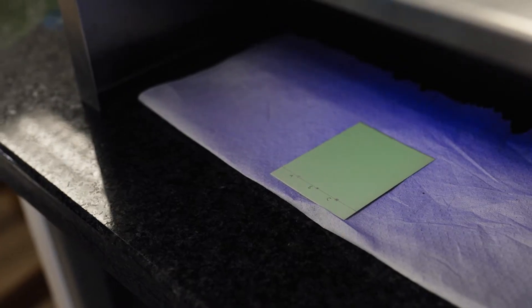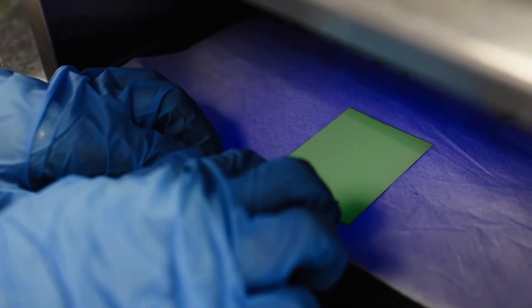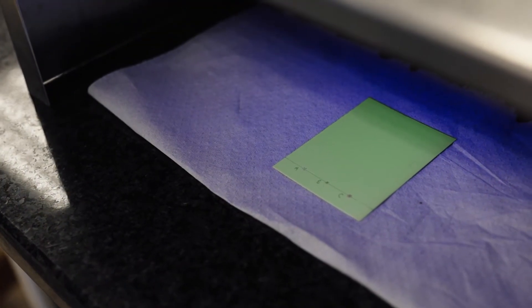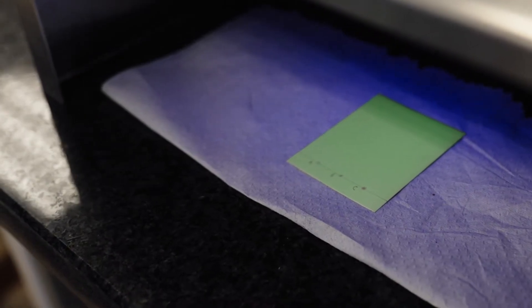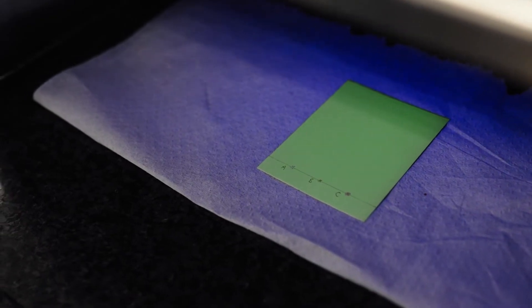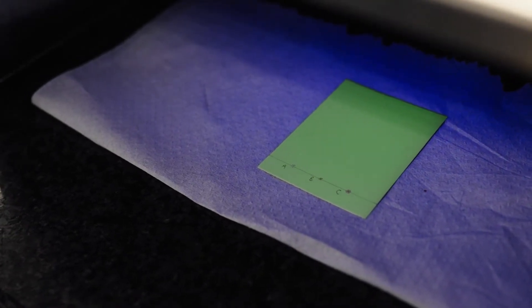Before we run the TLC plate, we're going to use a UV light to confirm that we have spotted everywhere. You can see that there are dots at each one of them. The salicylic acid is a bit lighter than the rest, and we'll also be able to see it when we run the TLC plate.